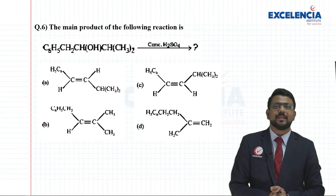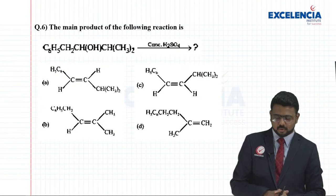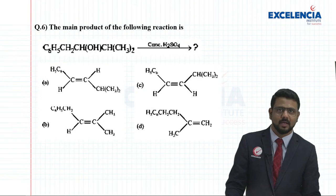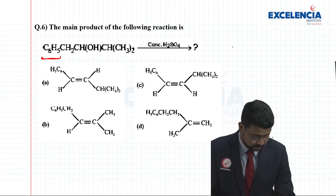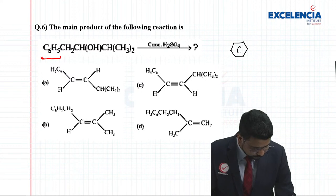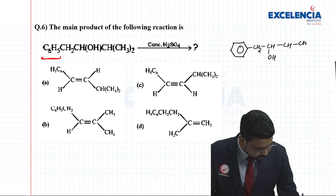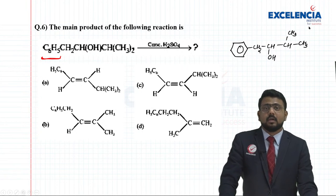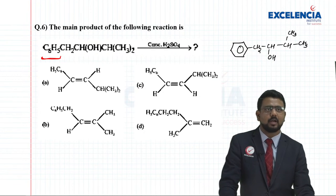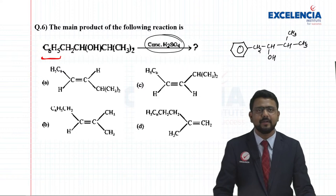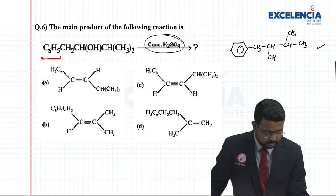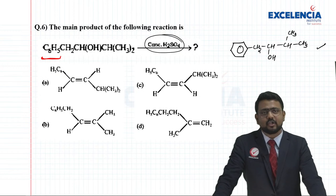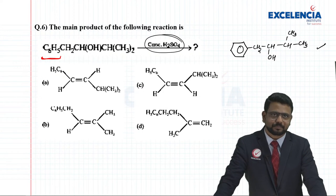Next question: the main product of the following reaction. You have C6H5CH2-CHOH-CH(CH3)2 treated with concentrated H2SO4. Let me draw this structure: benzene ring attached to CH2, CH(OH), CH(CH3)2. Concentrated H2SO4 acts as a dehydrating agent. So this alcohol undergoes dehydration — a beta elimination reaction — proceeding through carbocation formation. The intermediate is a secondary carbocation: C6H5-CH2-C⁺H-CH(CH3)2.